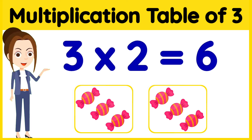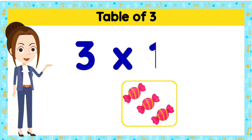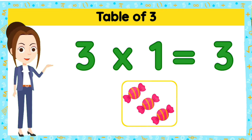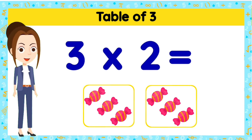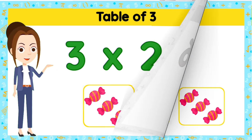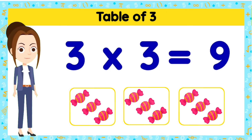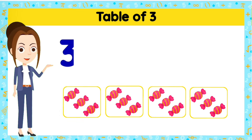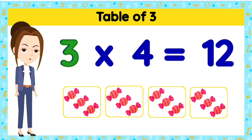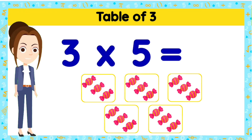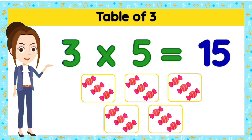Multiplication table of three. Come, let's read the table of three. Three ones is three. Three twos are six. Three threes are nine. Three fours are twelve. Three fives are fifteen.